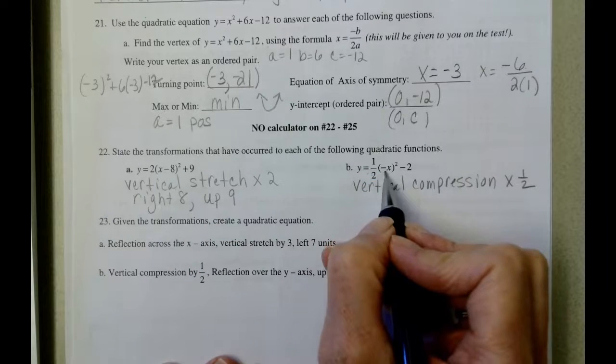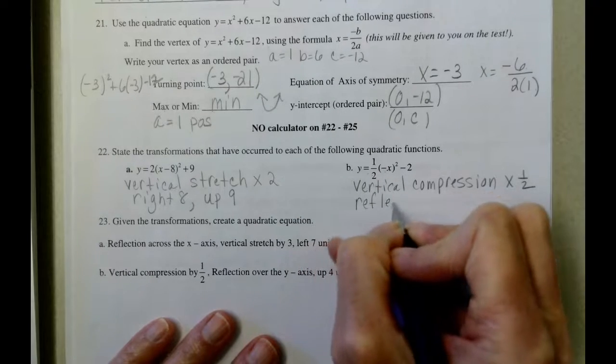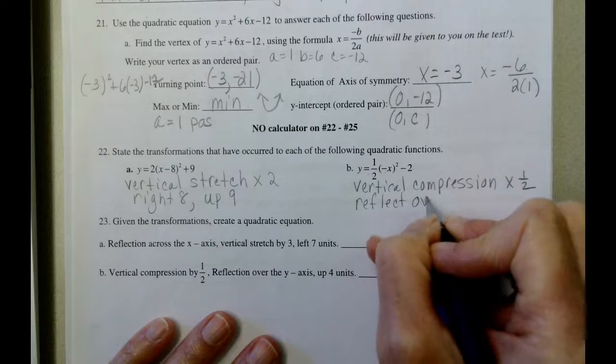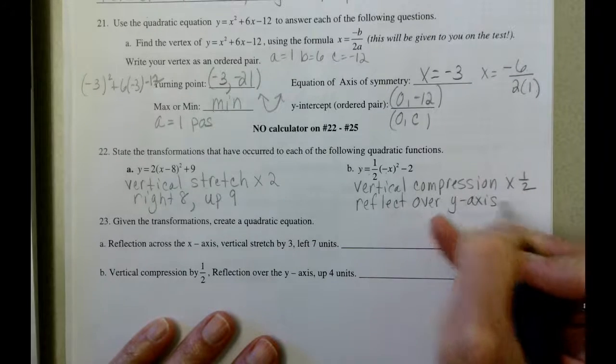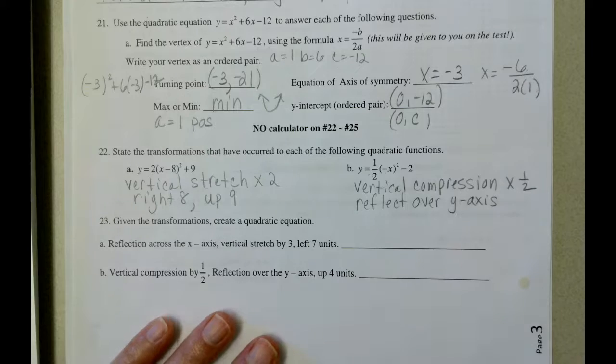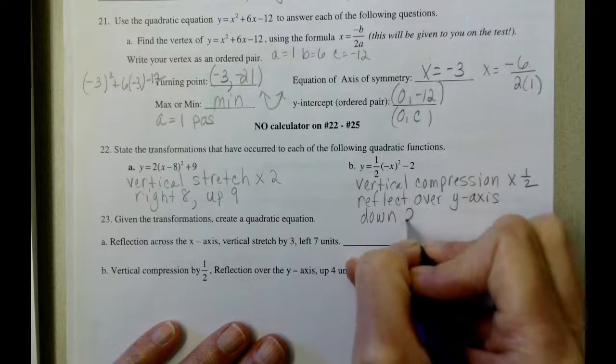The negative inside of the function means that we're going to reflect that over the y-axis, and you can't see that on your picture. And then the minus 2 is going to move our graph down 2.